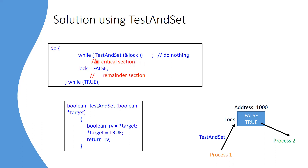Process 2 checks the lock variable using test-and-set and sees the value is true, so process 2 goes into an infinite loop — it is busy waiting. Process 2 cannot enter the critical section because the lock value is true. This satisfies mutual exclusion: only one process is inside the critical section at a time. When process 1 exits the critical section, it changes the lock variable back to false, allowing process 2 to enter.